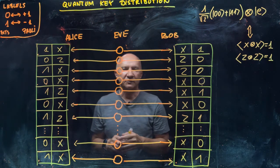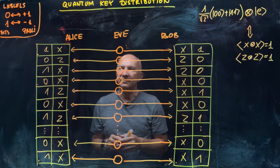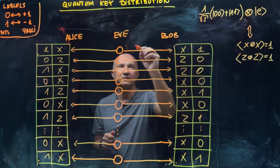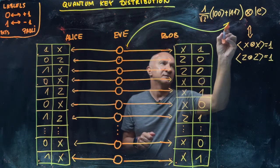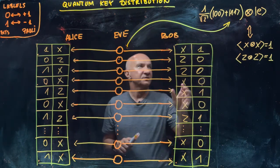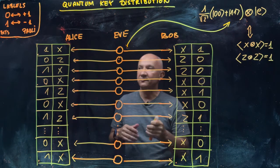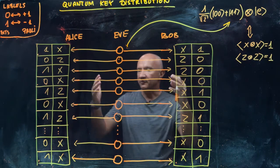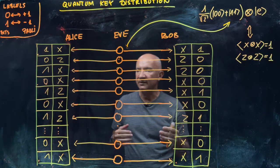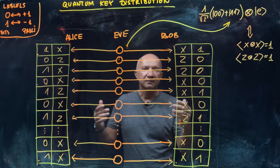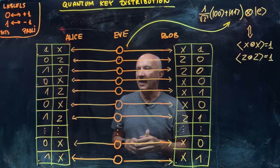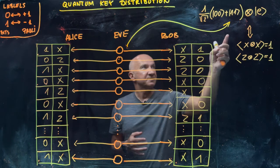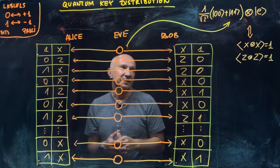The first thing Alice and Bob want to do is convince themselves that the qubits they receive are indeed in this maximally entangled state — that each pair is in this particular state. This is important because this state gives them the right kind of correlations if they choose the right kind of measurements, and correlations are important here because we want Alice and Bob to end up with identical binary strings.